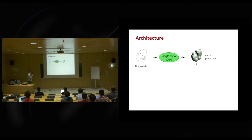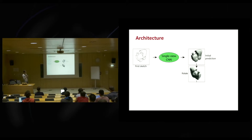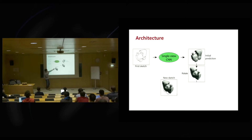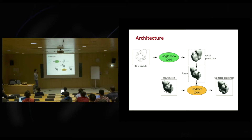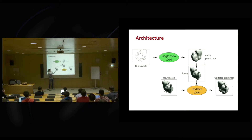We train this network with many pairs of line drawings and 3D shapes. Once the drawing is interpreted the user can rotate the shape, and if for instance wheels are missing on the other side, the user can draw them in a new line drawing using the existing prediction as guidance. A second network takes two inputs — the new drawing and the existing prediction — and updates the prediction to produce a new shape. This way we can iteratively add as many drawings as we want, because the updater always takes the latest prediction and improves it with the new drawing.